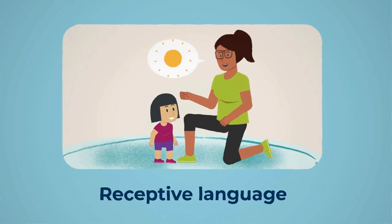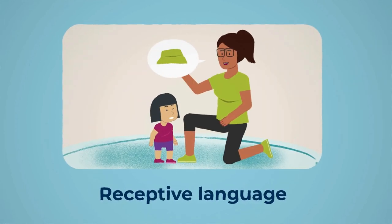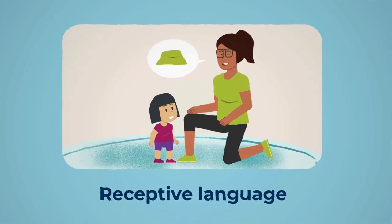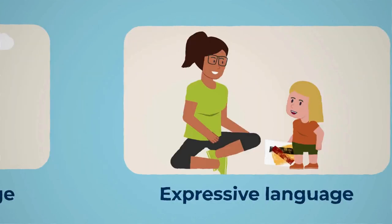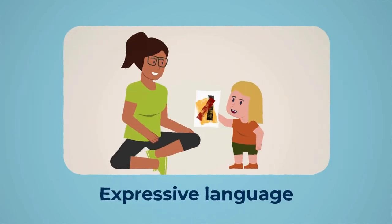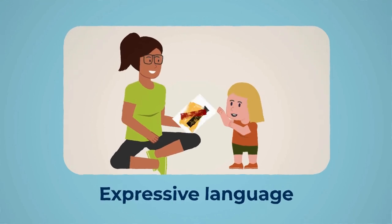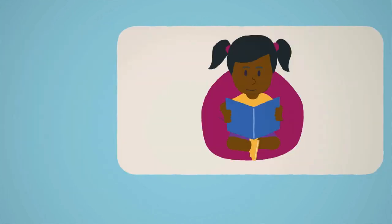Receptive language emerges as children understand verbal and non-verbal communication before they can even talk. Their understanding develops as they grow. Expressive language is the ability to make purposeful sounds, words and gestures to convey thoughts, feelings and ideas to others.